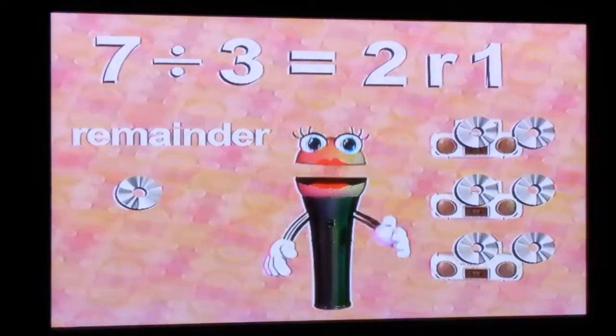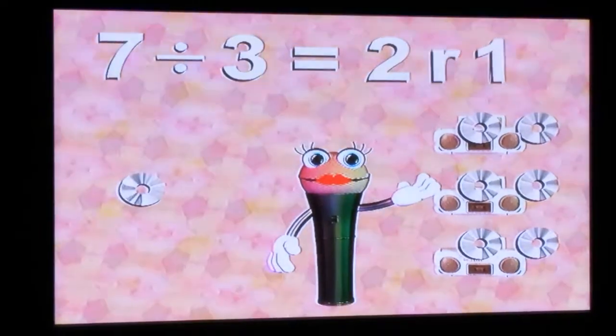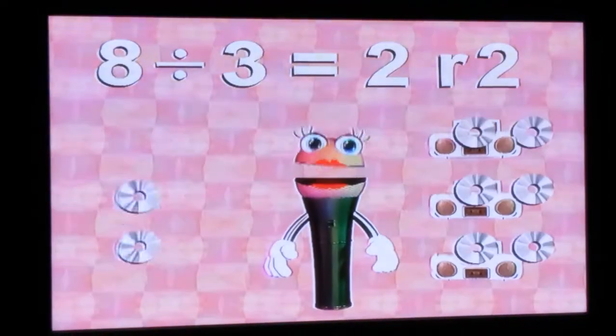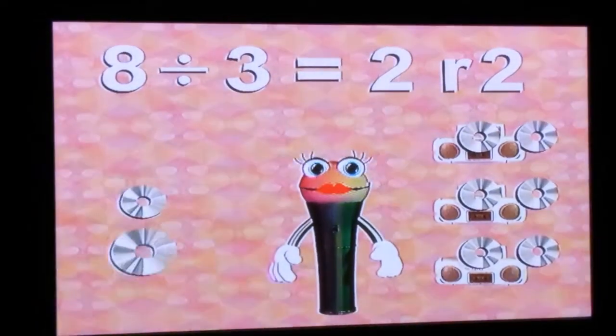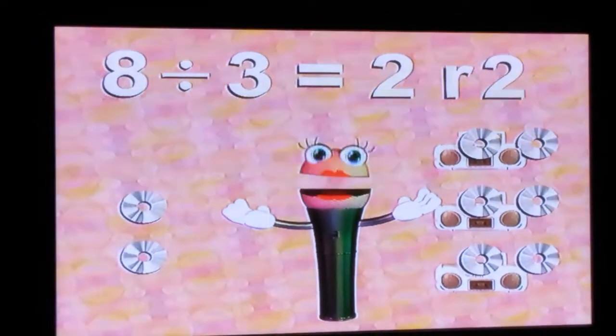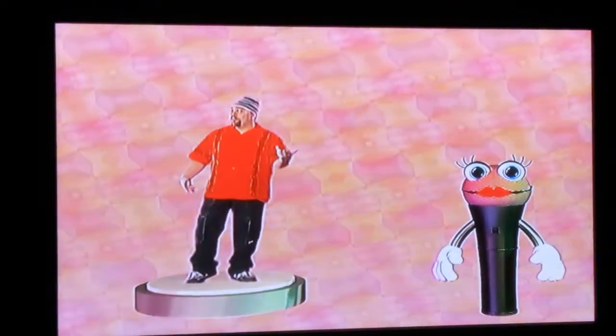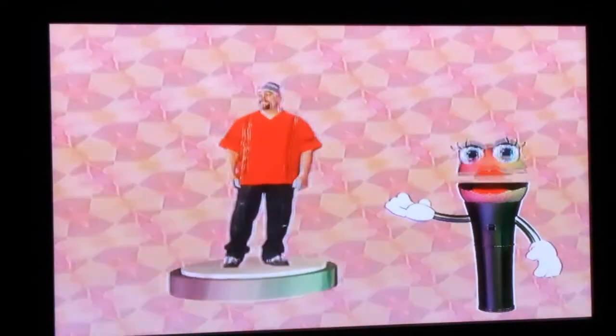If you divide eight by three, you get an answer of two with a remainder of two. That's because you have two left over when you divide eight by three. So remainders are just the leftovers, right? And the remainder must always be less than the divisor. If it's not, then you did not divide correctly. Try making your quotient a larger number.